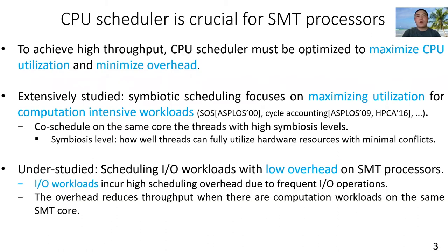This problem is very important for IO workloads. This is because IO workloads incur high scheduling overhead due to frequent IO operations. The overhead reduces system throughput when there are computation workloads on the same core.